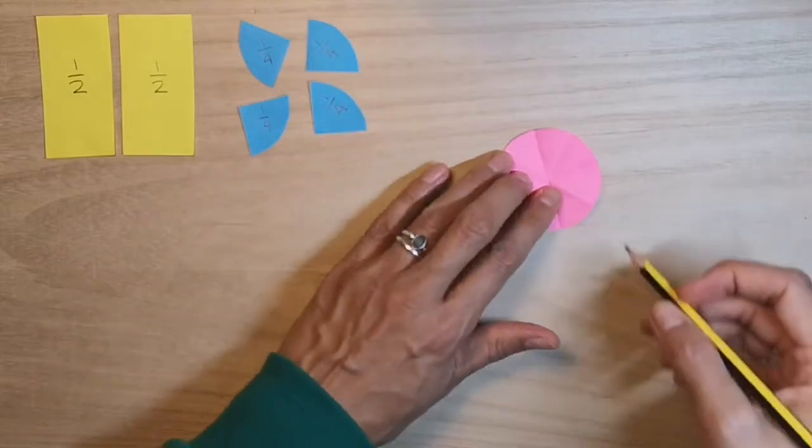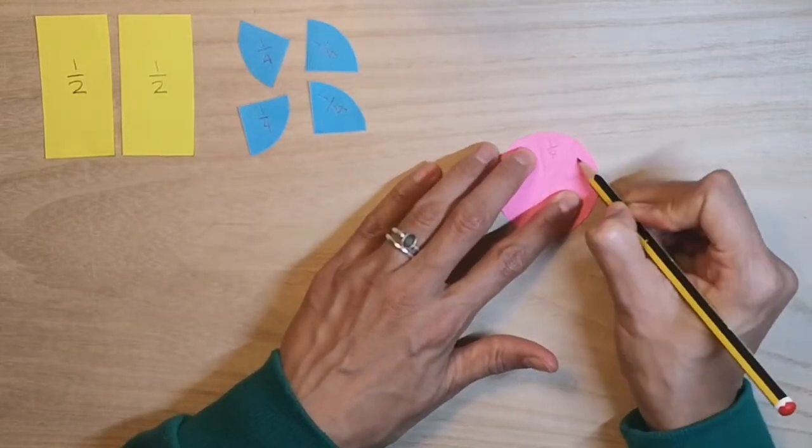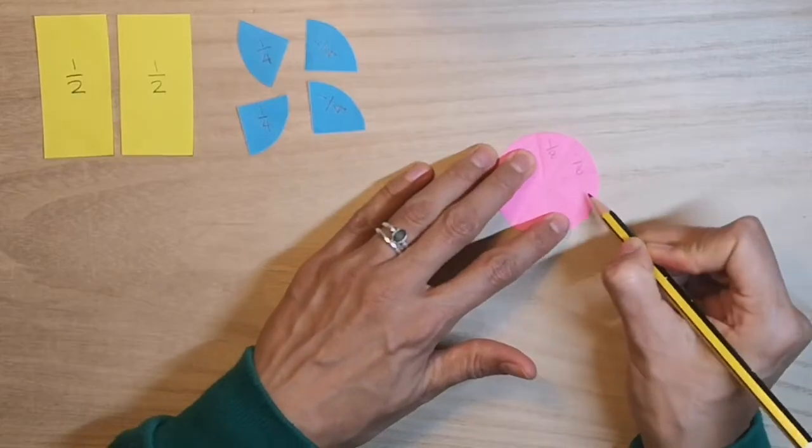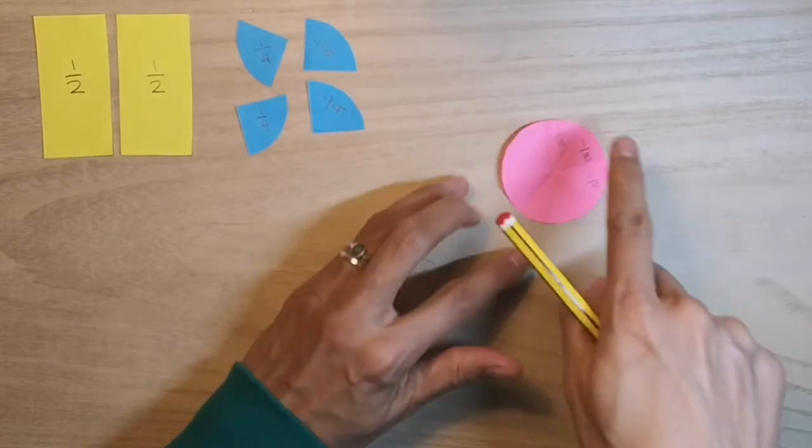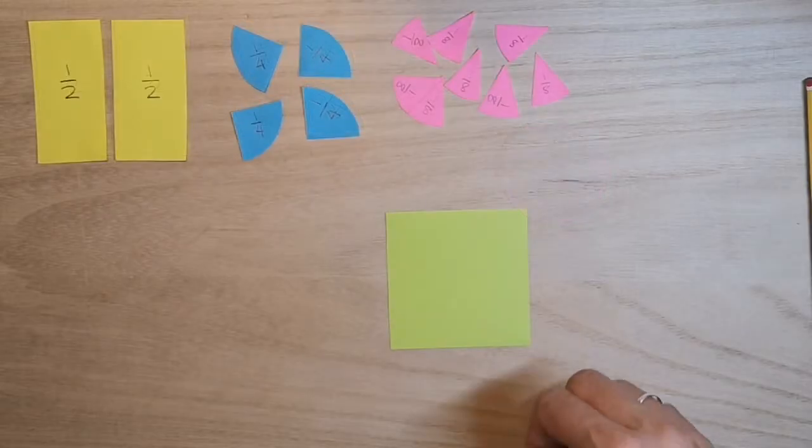I'm going to label those now. One eighth, one eighth. Once I've labeled them all, I'm then going to cut out my eighths.